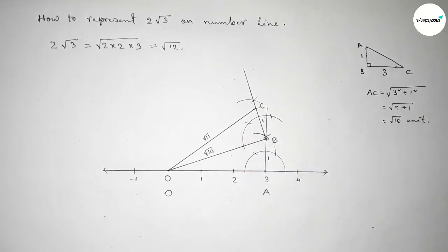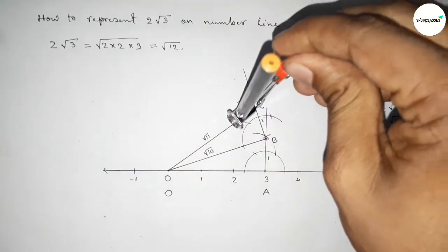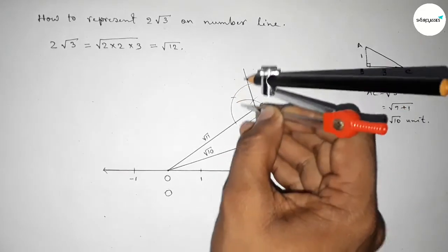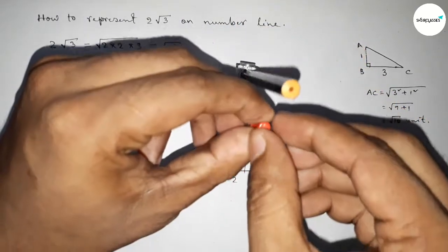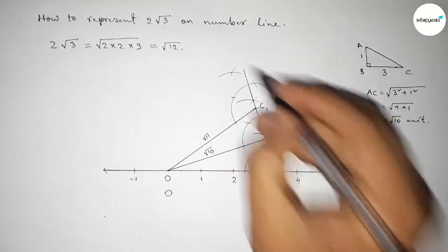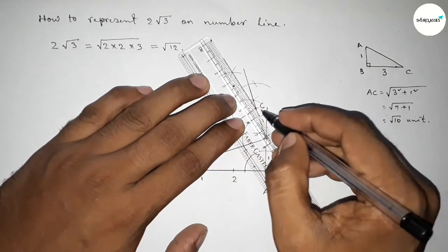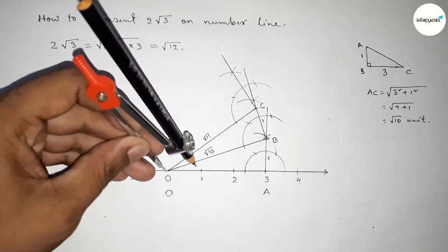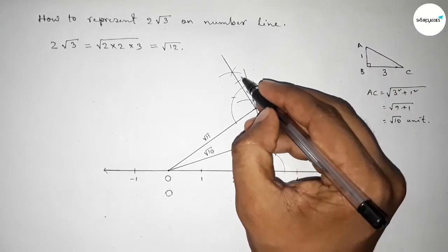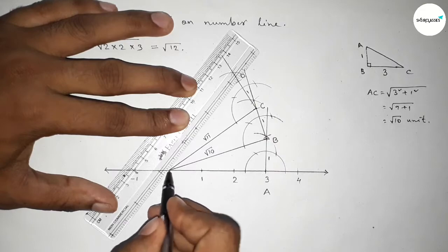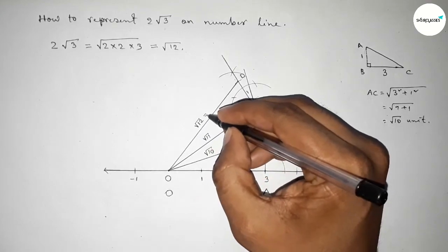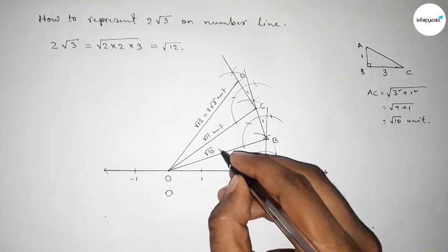Again we draw a 90-degree angle at point C using compass — taking any length, drawing arcs, cutting at intersections, and joining to get 90 degrees. Taking 1 unit length and cutting, we get point D. Joining O and D, from right angle triangle OCD, this hypotenuse is obviously √12 = 2√3 units.